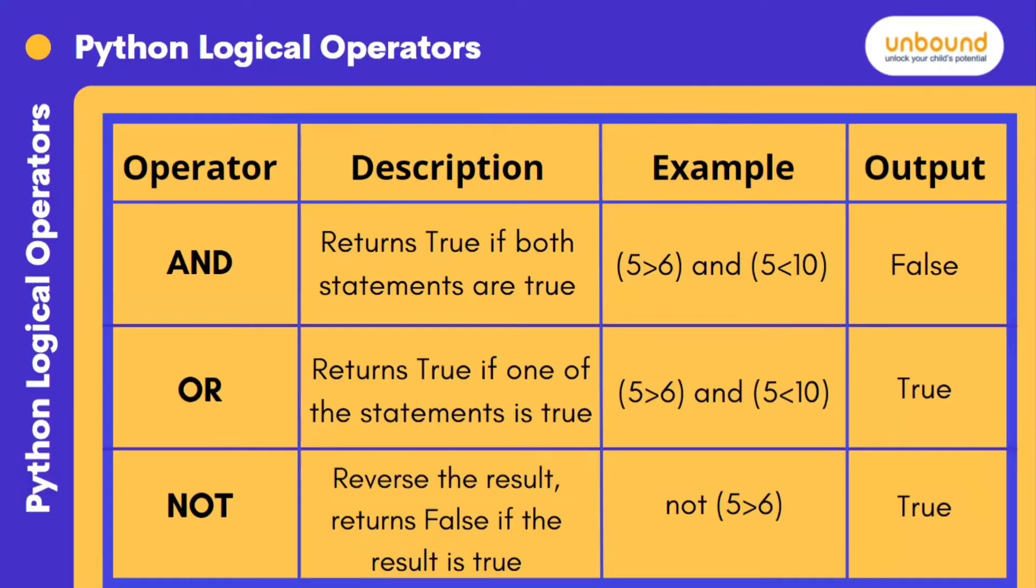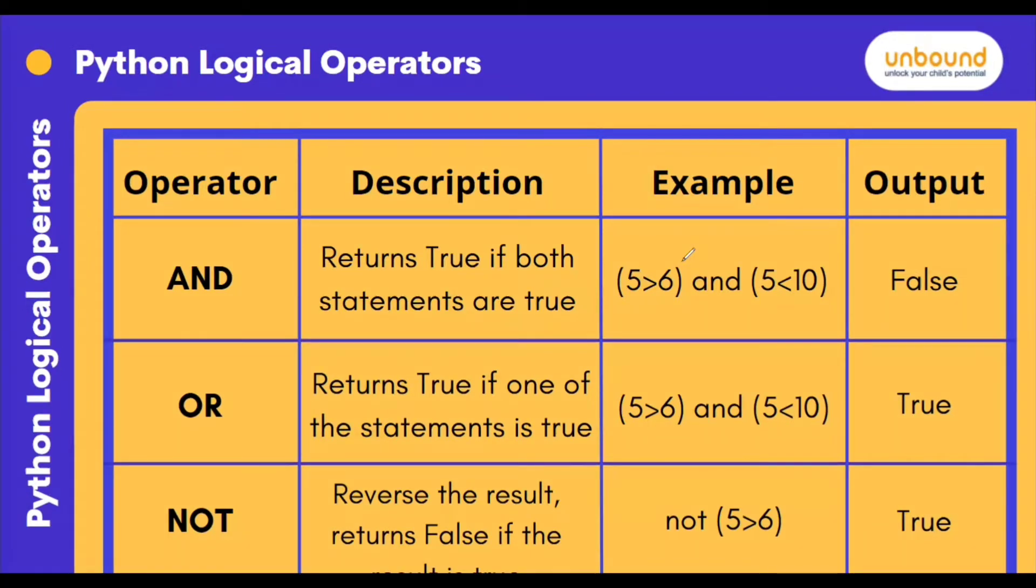So here's a table to understand logical and, or, and not. Here is an example to check whether it will give true or false. Now here is 5 greater than 6. This condition got false because 5 is less than 6. But here it is 5 is less than 10. This condition is true.